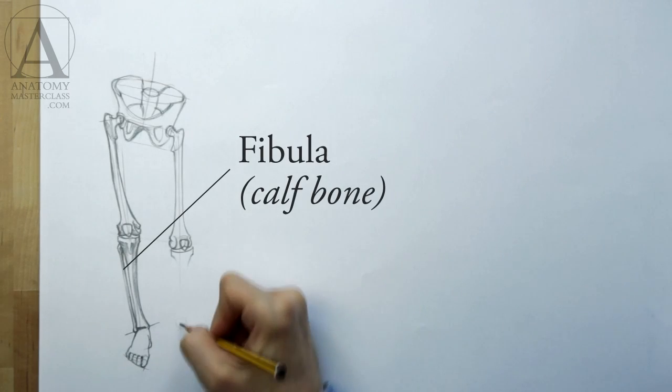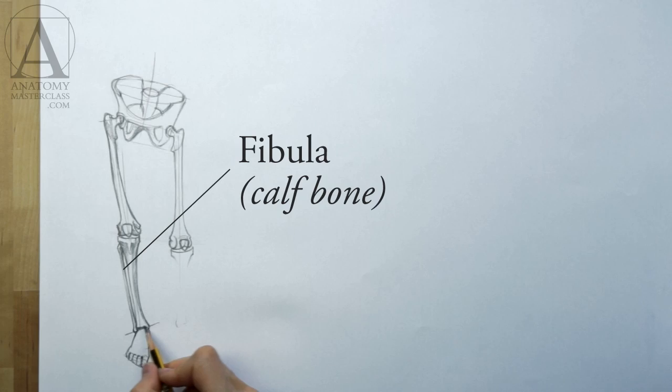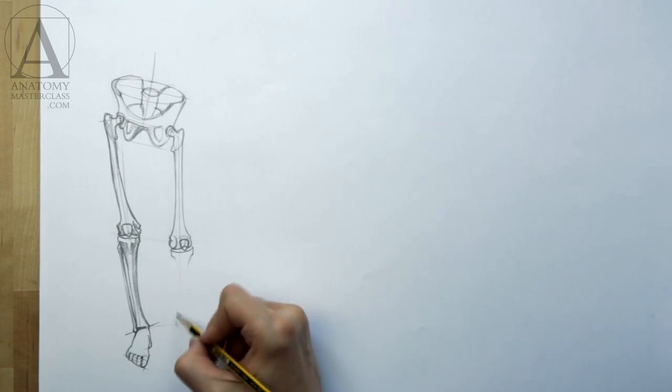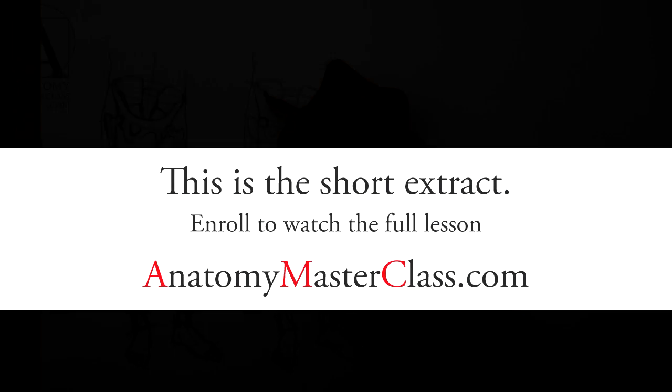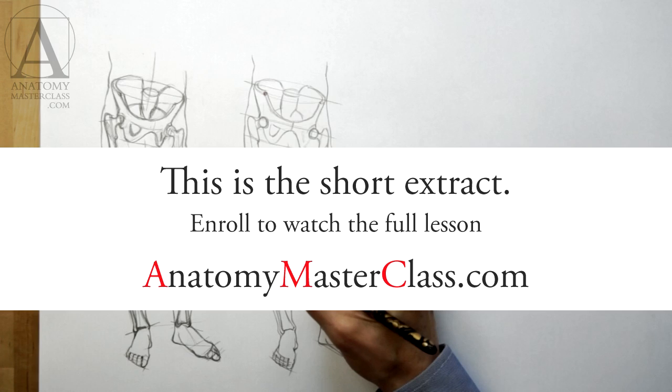On the outer side of the tibia, there is the bone called the fibula, or the calf bone. It is time to explain the muscles of the upper and lower leg.